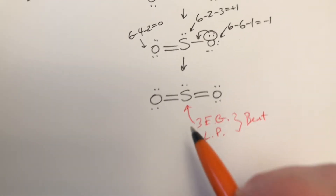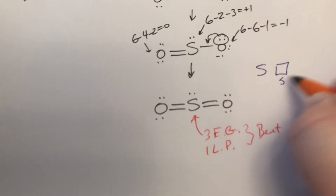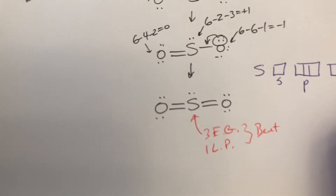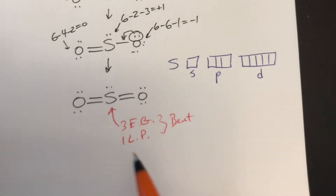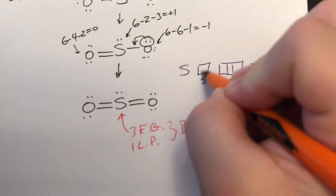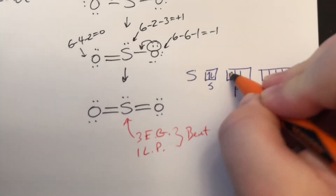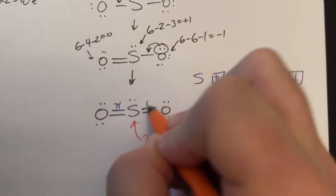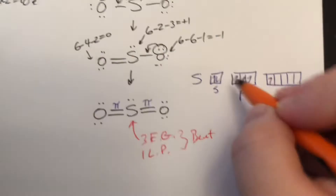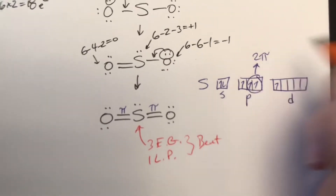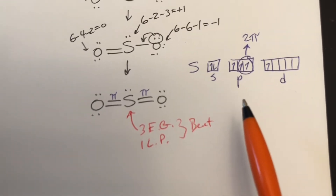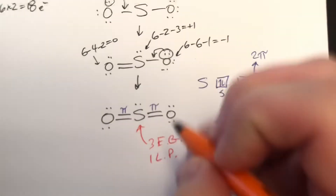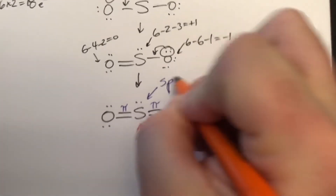For hybridization on sulfur, it has an s orbital, three p orbitals, but it also has five d orbitals. We have one lone pair and four bonds, so we need four unpaired electrons. We have two pi bonds — one on each side — so two of the p orbitals are used up to make those pi bonds. We merge whatever is left: one s orbital, one p orbital, and one d orbital. So the hybridization is spd.